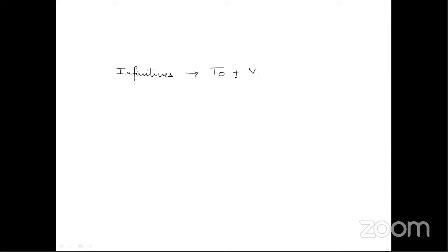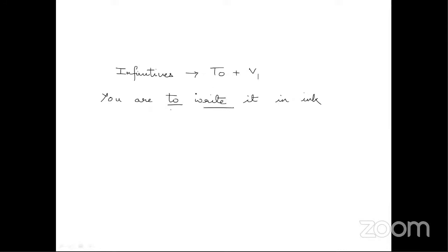What are infinitives? Infinitives means where we are using 'to', and along with 'to' we are using the V1 form of the verb. For example, the sentence is: 'You are to write it in ink.' Here we have 'to' and we have 'write' — so that means to plus V1 form of the verb.